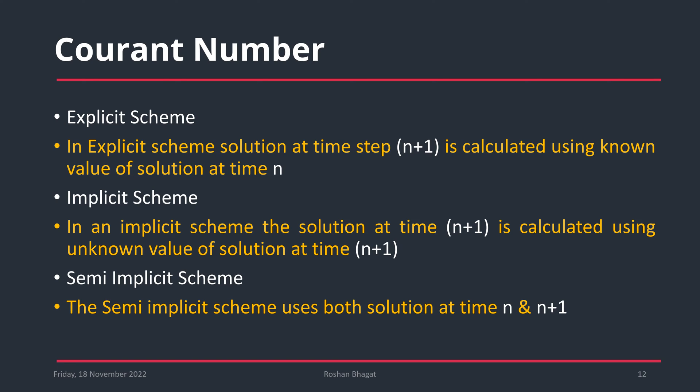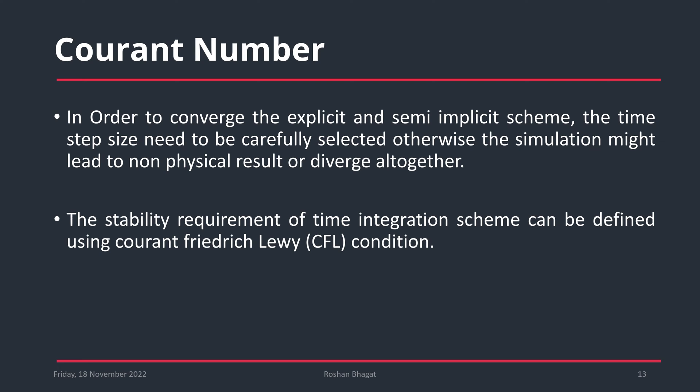In an implicit scheme, the solution at time n+1 is calculated using the unknown value at time n+1, unlike the explicit scheme which uses the known value at time n. The semi-implicit scheme uses both the solution at time n and n+1. To converge in the explicit and semi-implicit schemes, the time step must be carefully selected; otherwise, the simulation may lead to non-physical results or divergence in the velocity field.